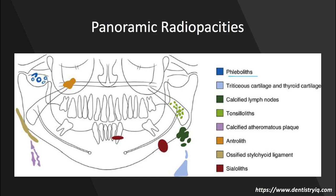It's rarely located down by the mandibular angle where the facial artery and facial vein cross. We have the thyroid cartilage, which is located down here. Calcified lymph nodes have a characteristic cauliflower-like appearance and tend to appear at the angle of the mandible. Tonsilloliths are the most common calcification that you'll see — a potential cause of halitosis or bad breath — and they're usually superimposed over the ramus.